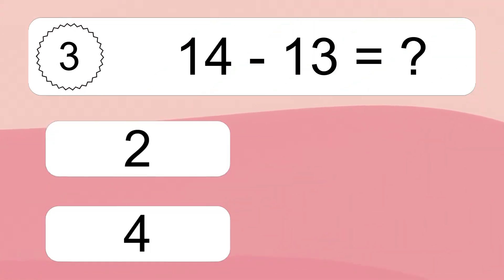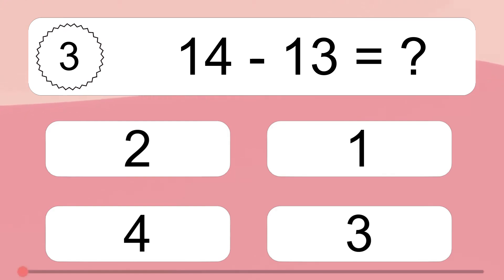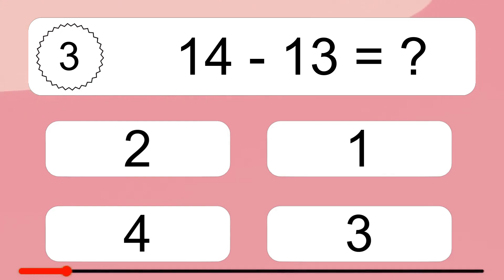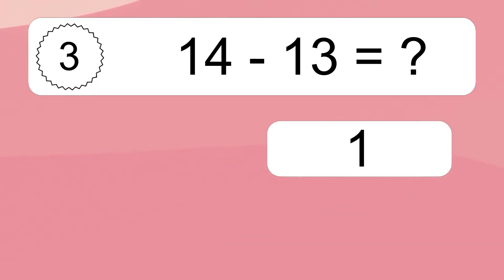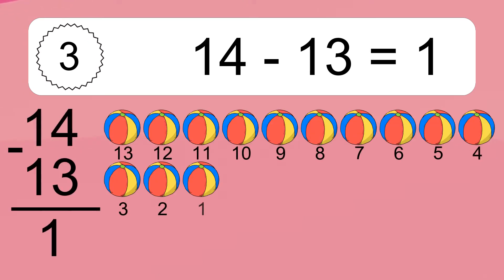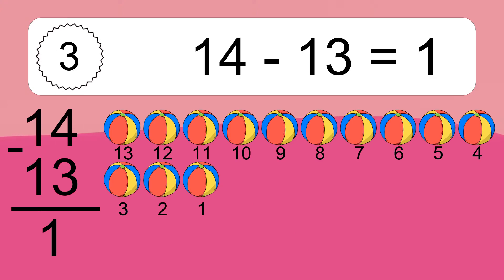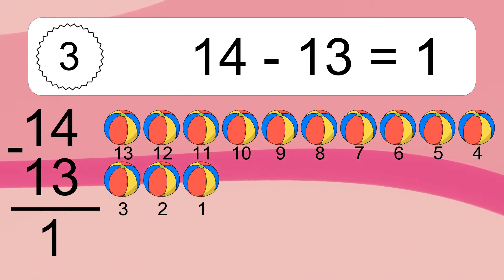14 minus 13 equals what? 14 minus 13 equals 1. Let's count it: 13, 12, 11, 10, 9, 8, 7, 6, 5, 4, 3, 2, 1.